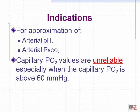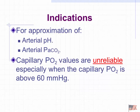When we need to know pH and PCO2, we can get those values from a capillary sample. However, the capillary PO2 is very unreliable because it reflects local oxygenation too much. Especially when the value is above 60, it really does not become a useful value.